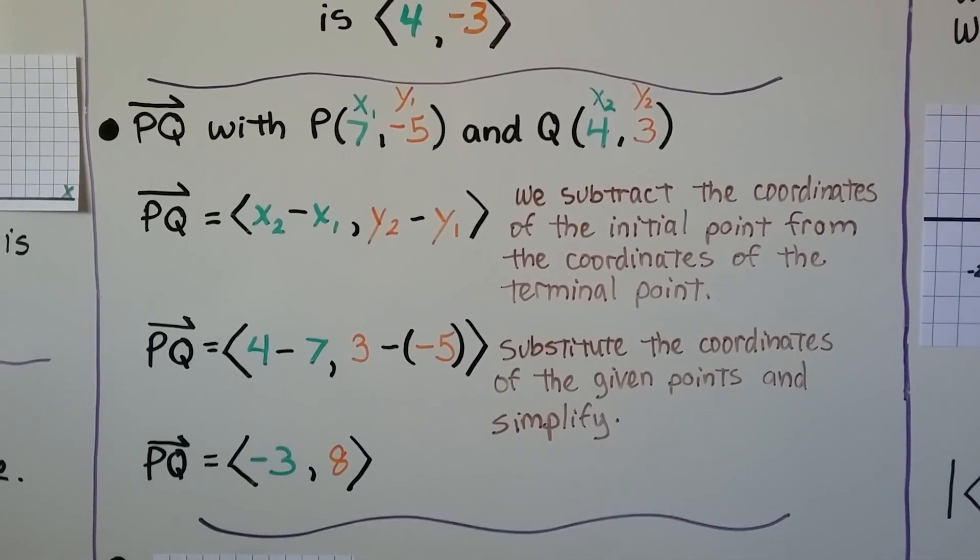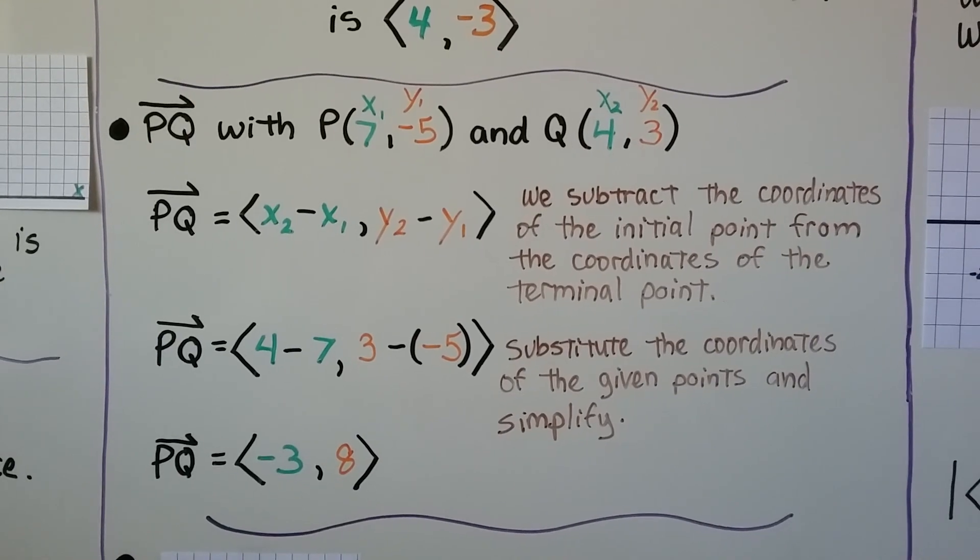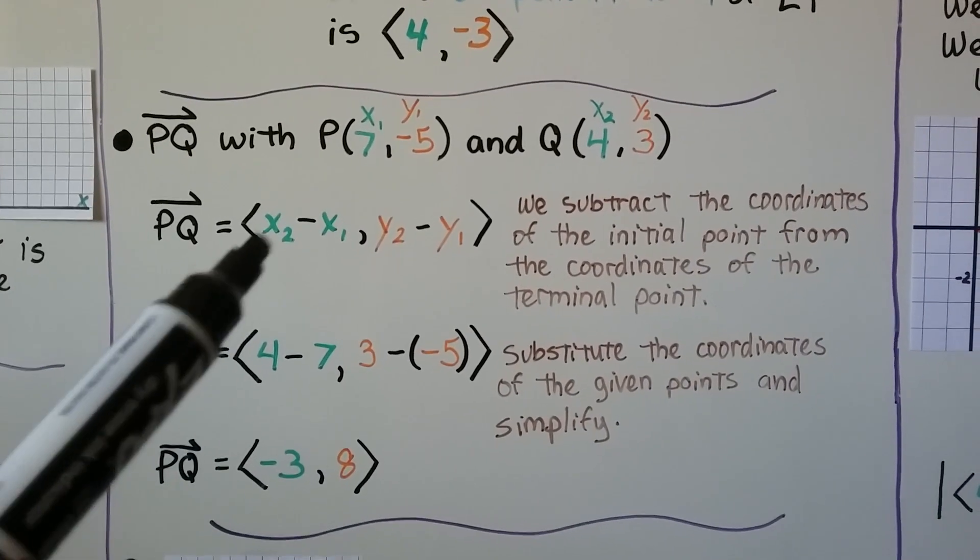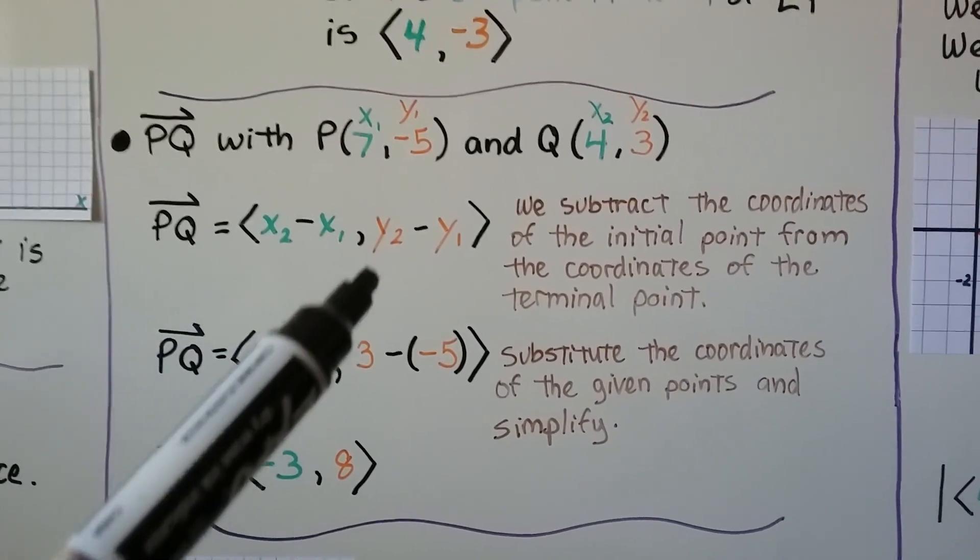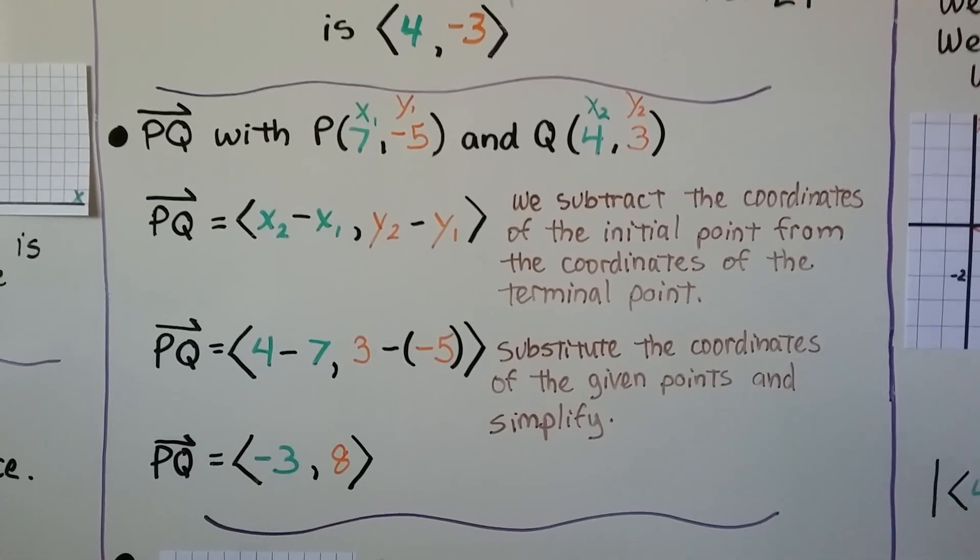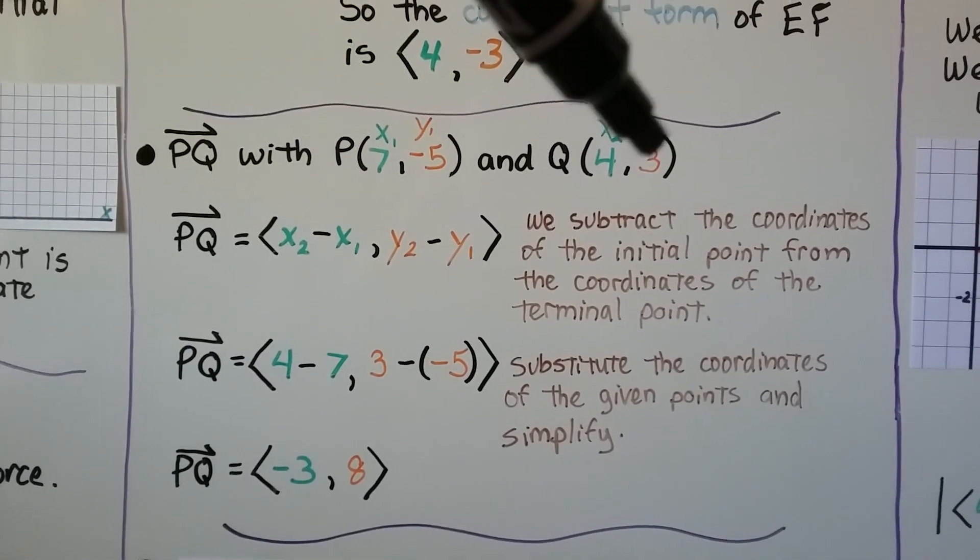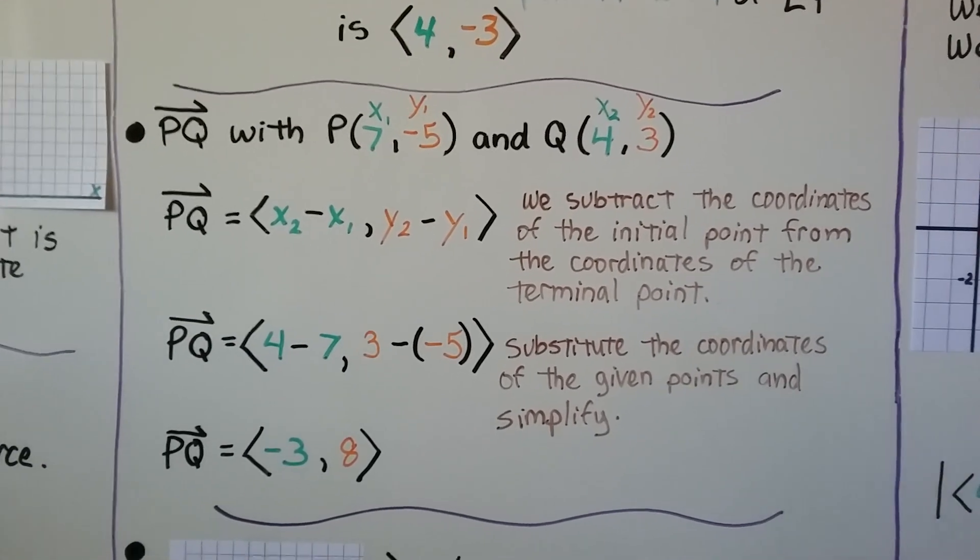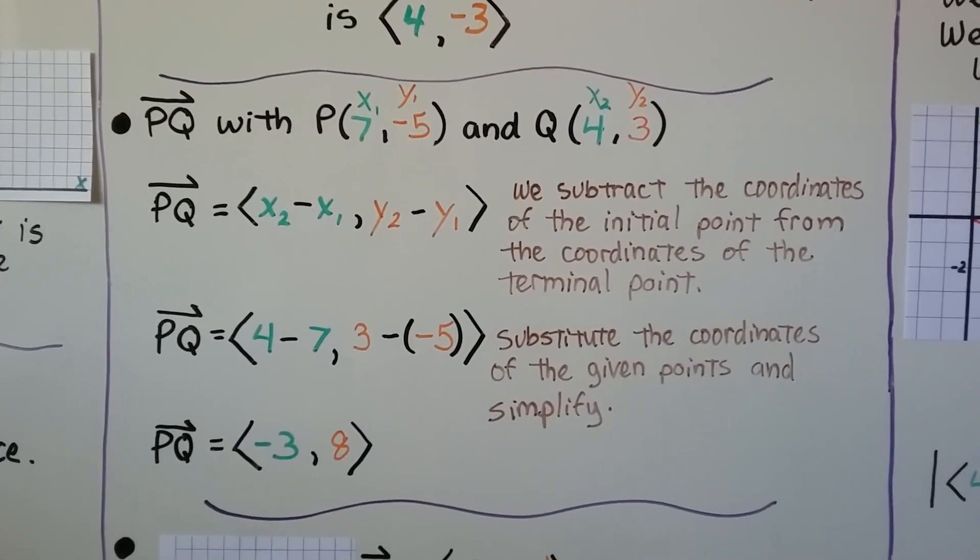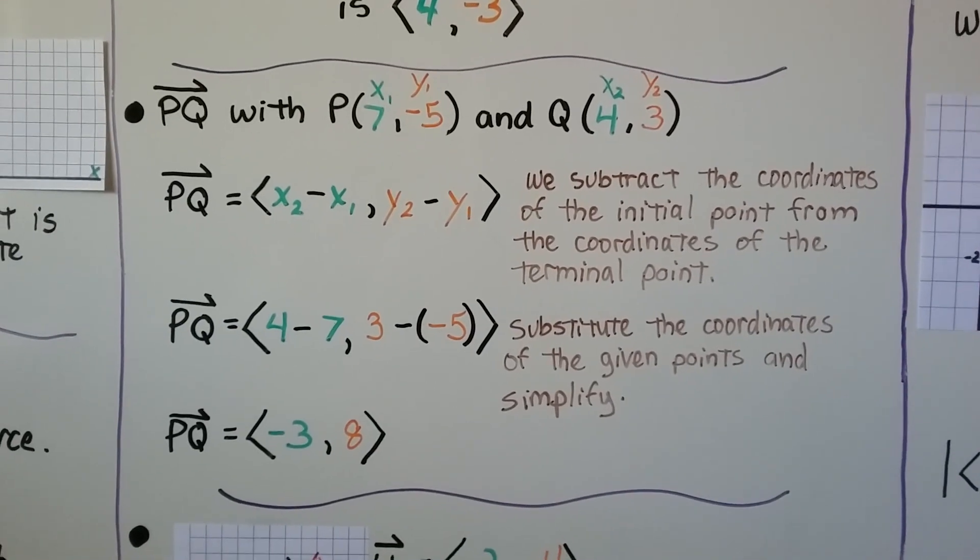We subtract the coordinates of the initial point from the coordinates of the terminal point. So we would do x sub 2 minus x sub 1 and then y sub 2 minus y sub 1. So that's going to give us a 4 minus a 7 and a 3 minus a negative 5 when we substitute those coordinates, those given points.